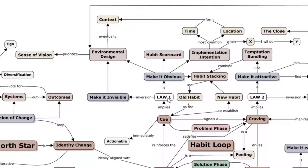Each law has an inversion. If you want your triggers to be obvious to do something, the inversion is to make it invisible. You can design your environment for this. Personally, if we're gifted junk food, I put it in the closet - just the fact that I don't see it means I often forget it's there completely. Similarly, you can turn off notifications on your phone. This ties into the central theme of willpower: if you don't even have the temptations, it's easier to have willpower.